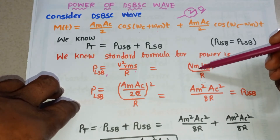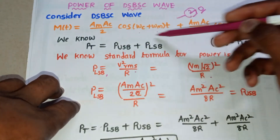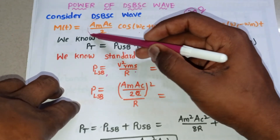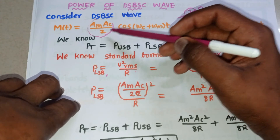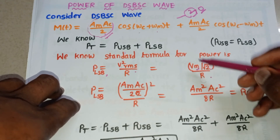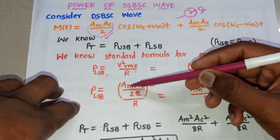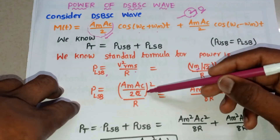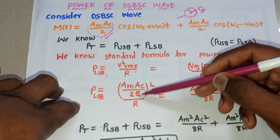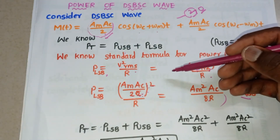Here, V_rms = Vm / √2, where Vm is the amplitude of the signal. From the DSBSC expression, the amplitude of the modulated wave is Am × Ac / 2. Substituting: P = (Am × Ac / 2)² / (2R) = Am² × Ac² / (4 × 2R) = Am²Ac² / 8R. This is the power of each sideband.